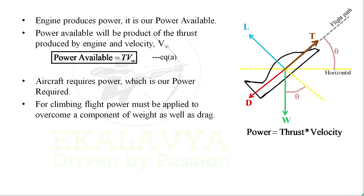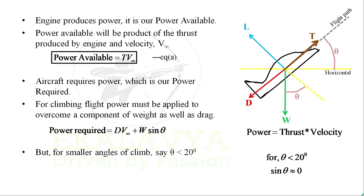Considering climbing flight, power must be applied to overcome a component of weight as well as drag. We have Power Required equal to D times V infinity plus W sine theta. But for smaller angles, say theta less than 20 degrees, sine theta approximates to zero, with which the term W sine theta reduces to zero. We end up with Power Required equal to D times V infinity.